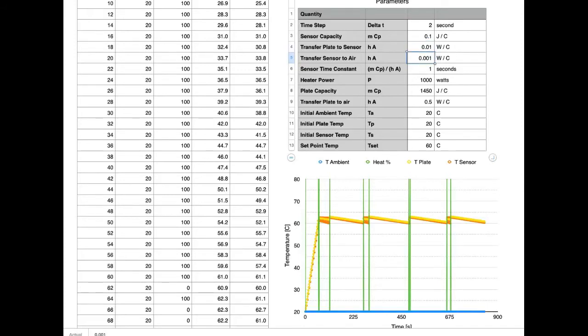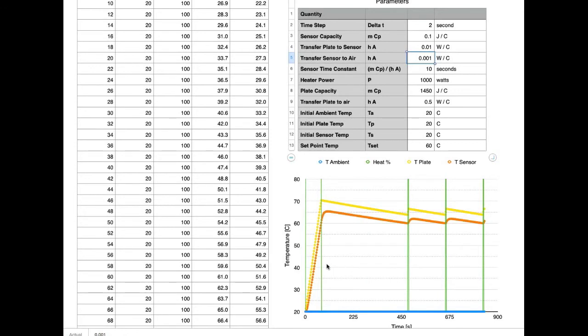Switching that back to where I had it, which I think is a reasonable value, we see that the plate temperature is getting up fairly high, up to 70 degrees Celsius, even though our target was to only get it to 60 degrees Celsius. That's because the sensor never quite catches up with the plate.